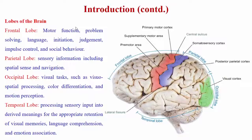These are the different lobes present in our brain: the frontal lobe, parietal, occipital, and temporal lobe. Each has its own functions, such as motor functions, sensory processing, and for the occipital lobe, vision. I will not go in depth about these.